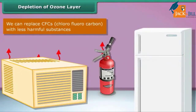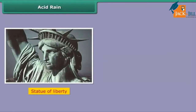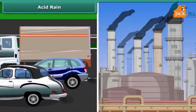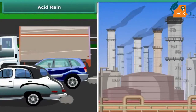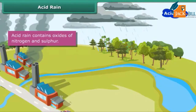The Statue of Liberty in New York and the Taj Mahal in Agra are badly damaged due to acid rain. Industries and vehicles release toxic gases like sulfur dioxide and nitric oxide into the atmosphere. These gases react with the water vapors present in the atmosphere to form sulfuric acid and nitric acid, which fall as acid rain.